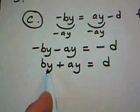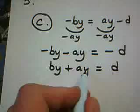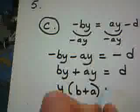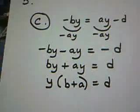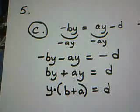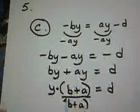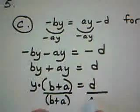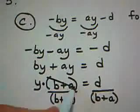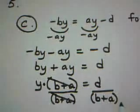If I want to now solve for Y, I have my Y terms together. If I factor out a Y in parens, I'm left with B plus A. Y is by itself, almost. We have to finish by division. And undoing multiplication, divide both sides of the equation by B plus A. On this side, the B plus A factors cancel. Y is equal to D over B plus A.